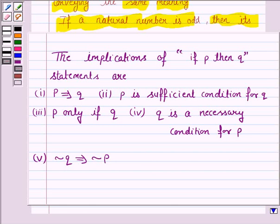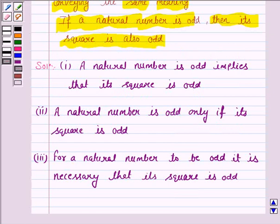Another different way is P is sufficient condition for Q. So the fourth way is: for a square of a natural number to be odd, it is sufficient that the number is odd.